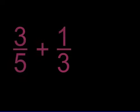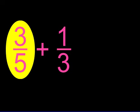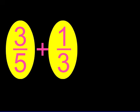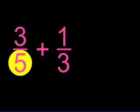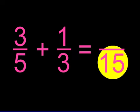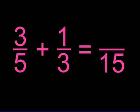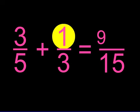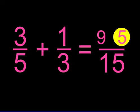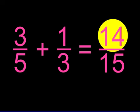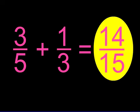See how easy it is? Let's try one last problem. Three over five plus one over three. Five times three equals fifteen, and that's our denominator. Three times three equals nine. One times five equals five. Nine plus five equals fourteen. So our answer is fourteen over fifteen.